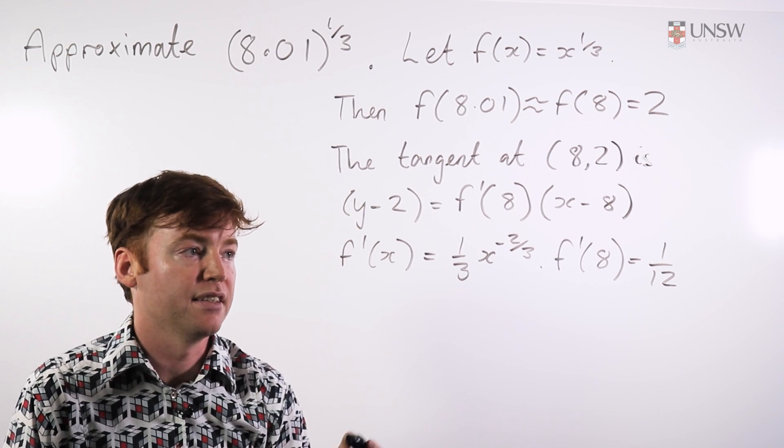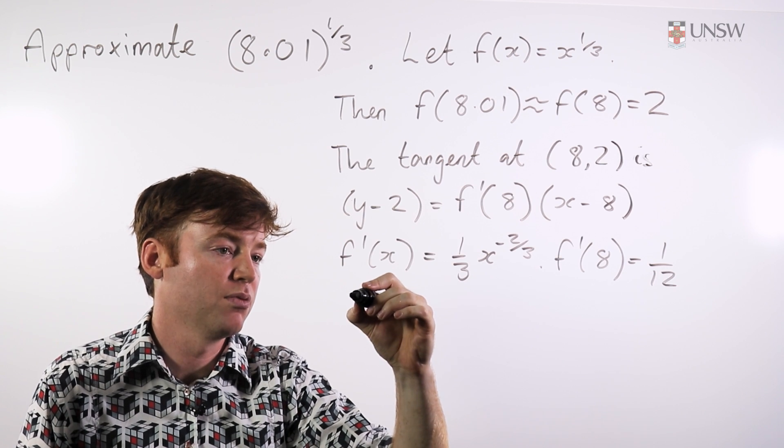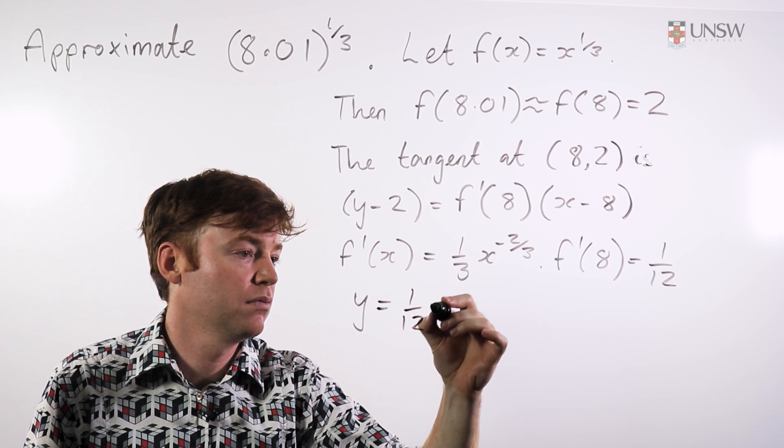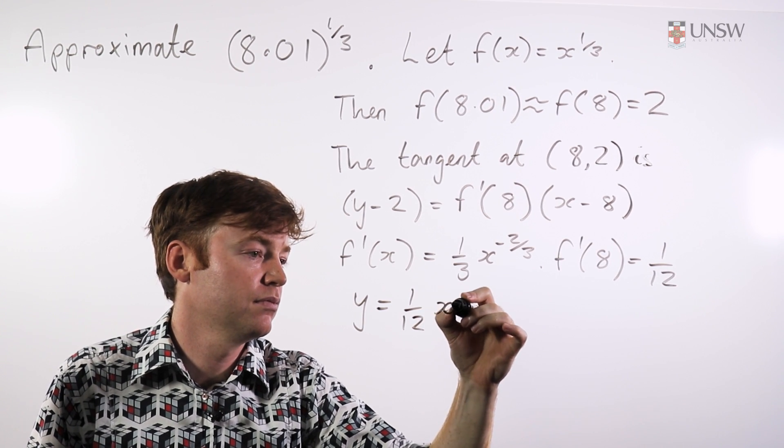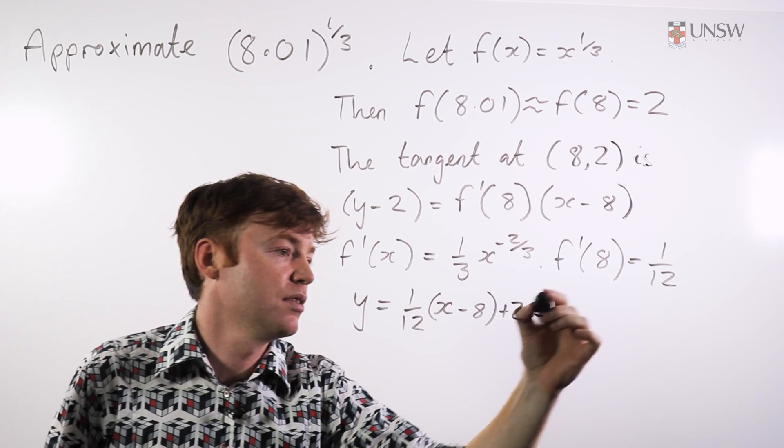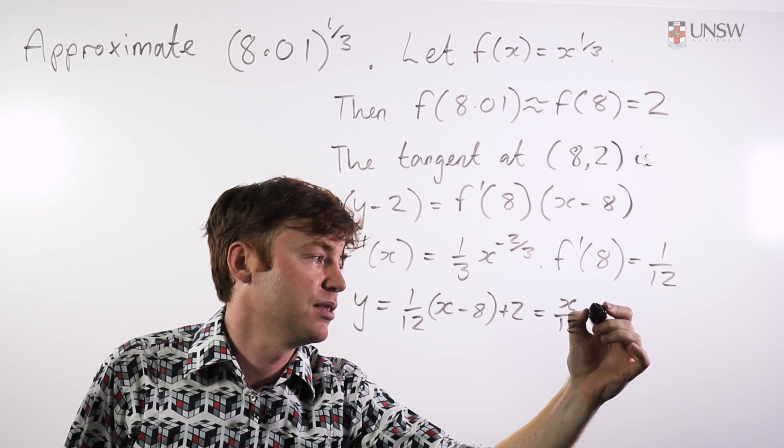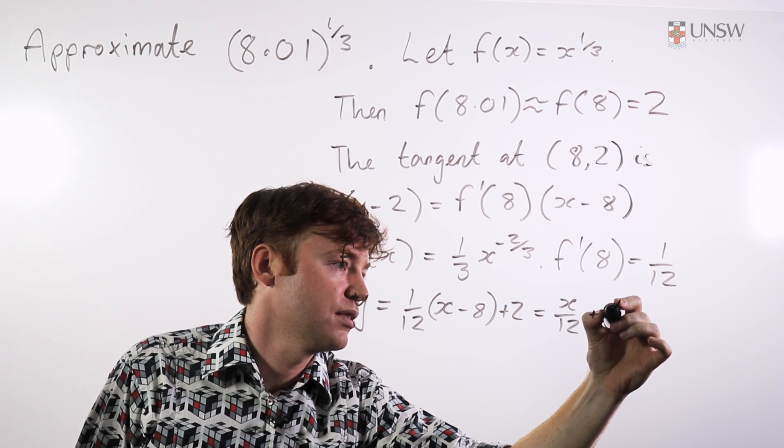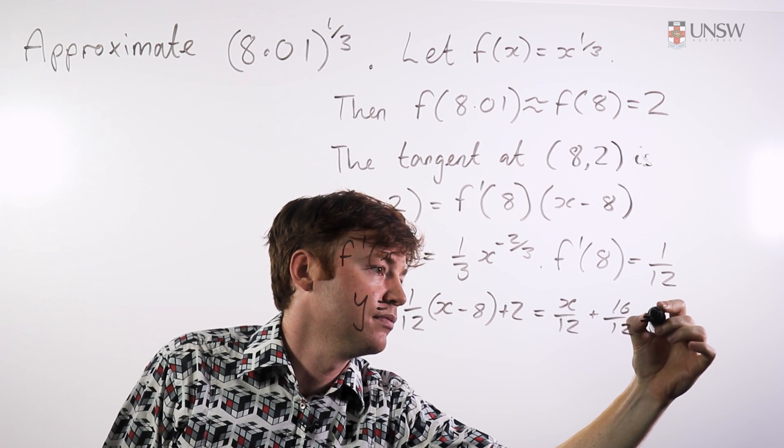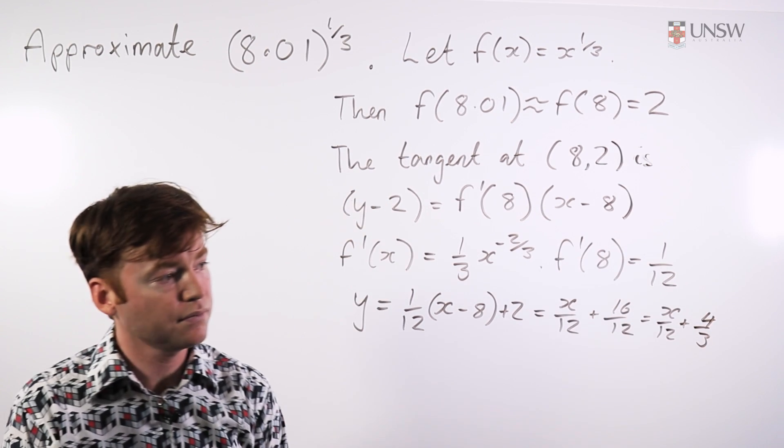Good, so just plugging 8 into there. And so I know exactly what the equation of the curve is, so I can rewrite this as a function y is equal to... So that's x on 12, and that's negative 8 plus 24, which is plus 16.